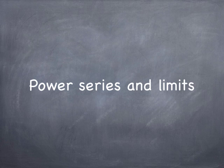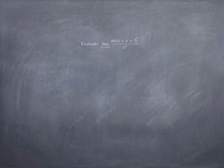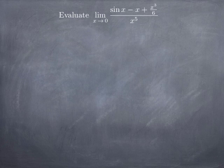We can also use power series to evaluate limits. For instance, we want to evaluate the limit as x goes to 0 of sin(x) minus x plus x³/6, divided by x⁵. If you plug in x equals 0, sin(0) is 0, so you get 0 at the top and 0 at the bottom — an indeterminate form of type 0/0. You might think to use L'Hôpital's rule.